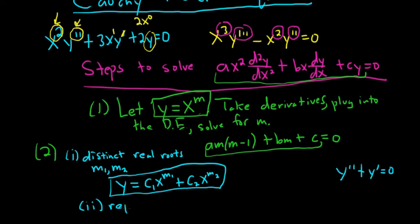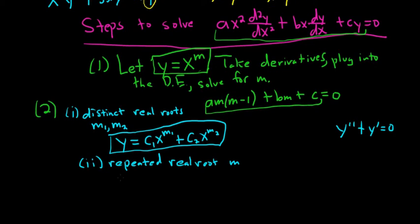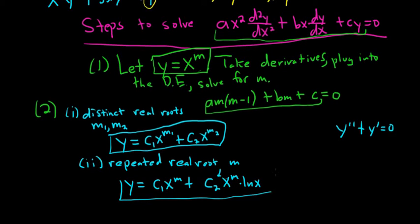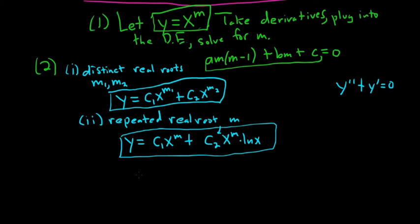The second case is if you get a repeated real root, say m. In this case you get y equals c1 x to the m plus c2, and whenever you have repetition — just as before we would multiply by x for homogeneous equations — here we multiply by ln x instead. So it would be x to the m times ln x. If the multiplicity is higher, say multiplicity 3, you would also have plus c3 times x to the m times (ln x) squared.